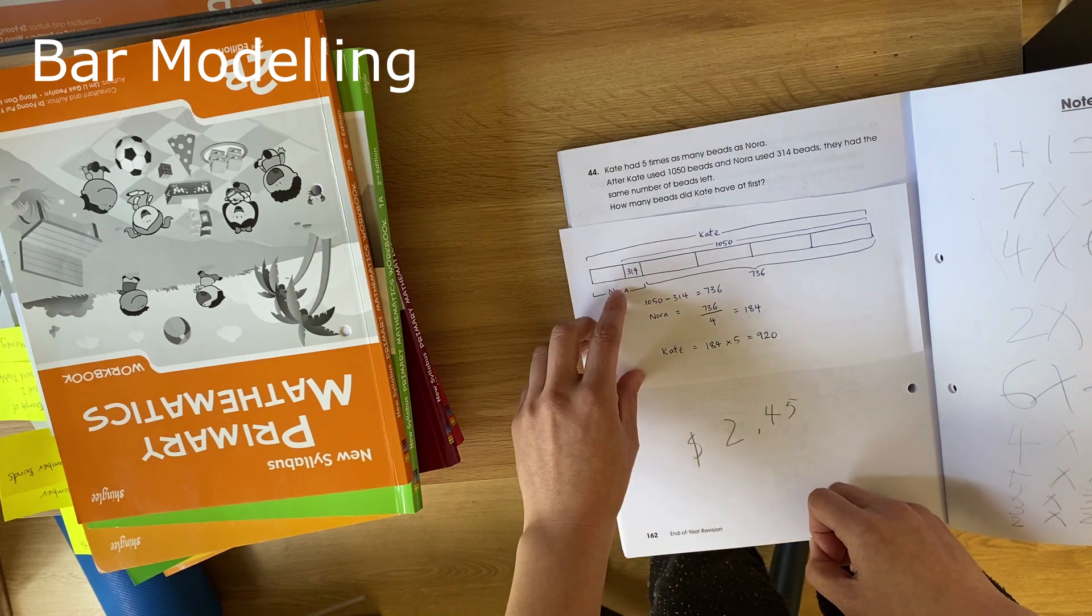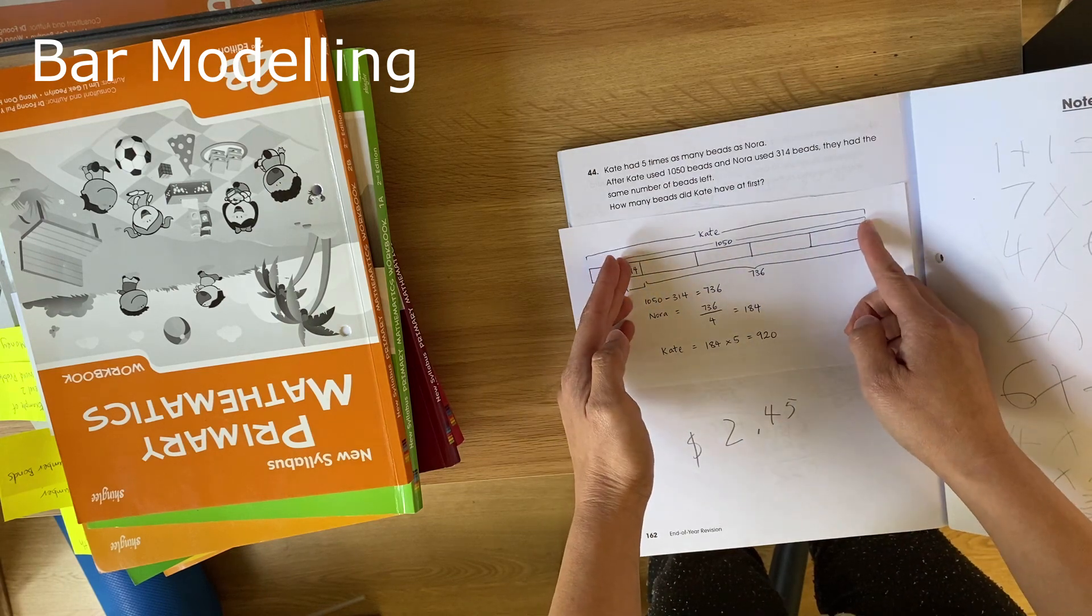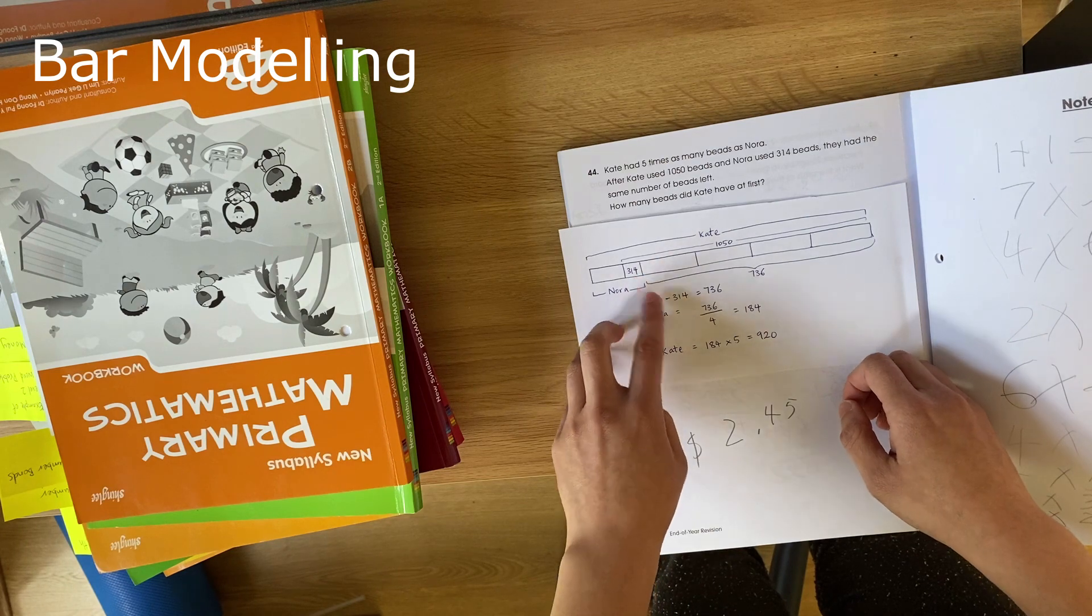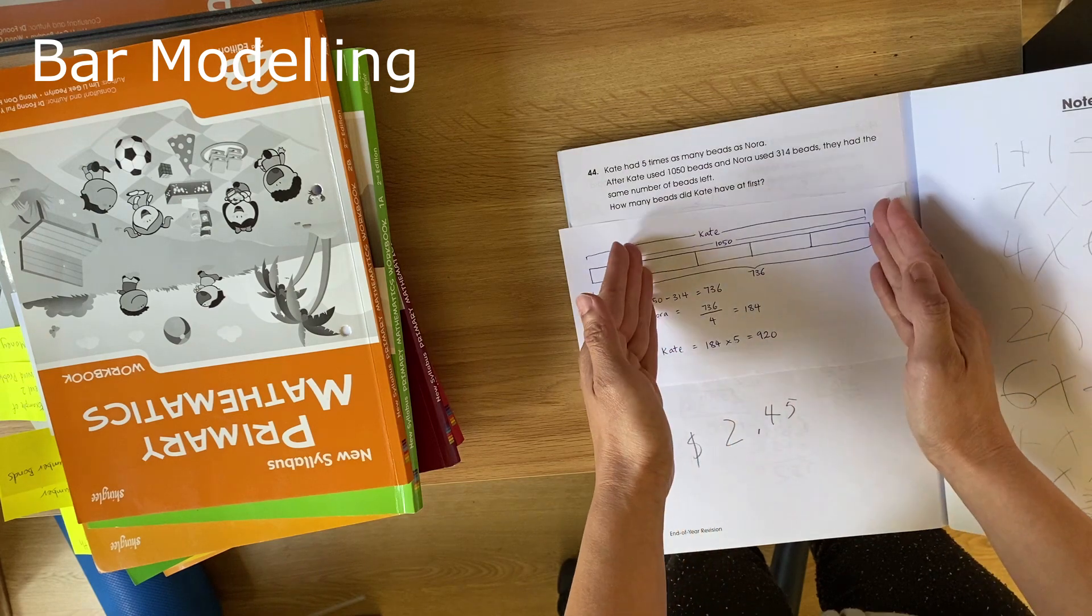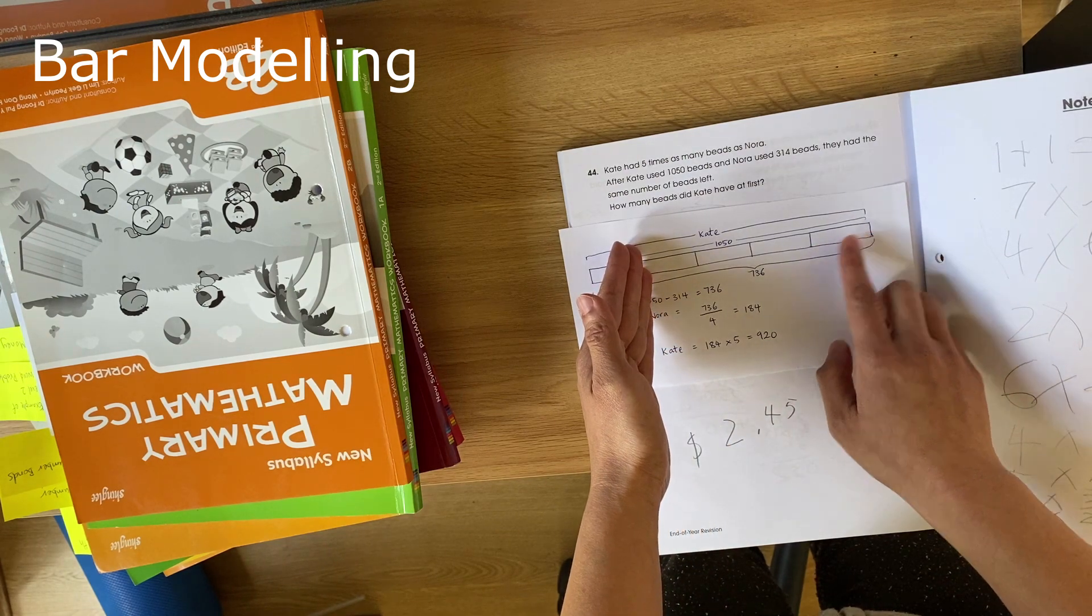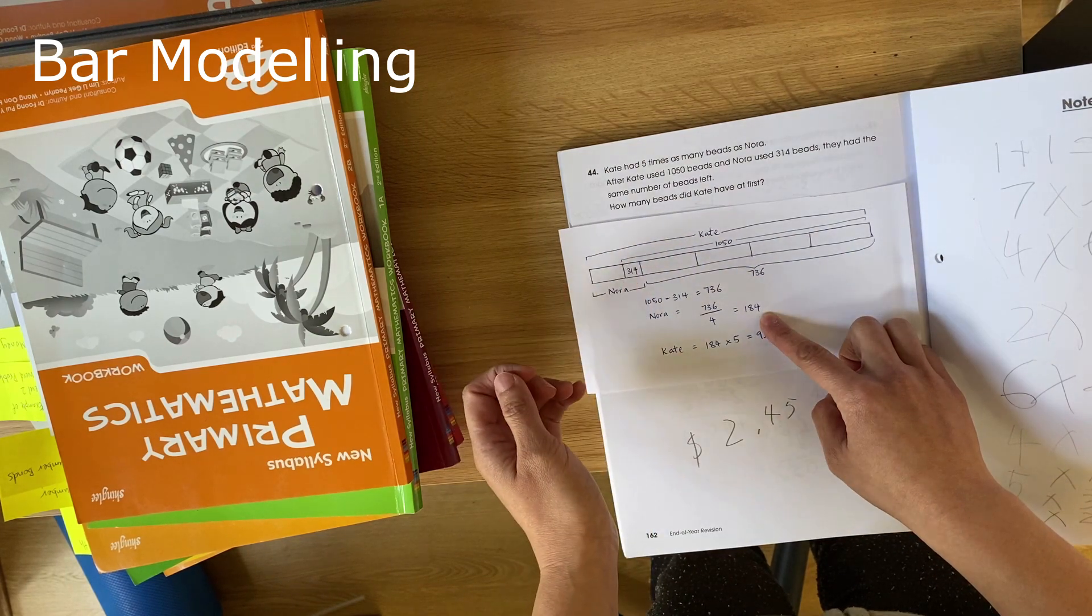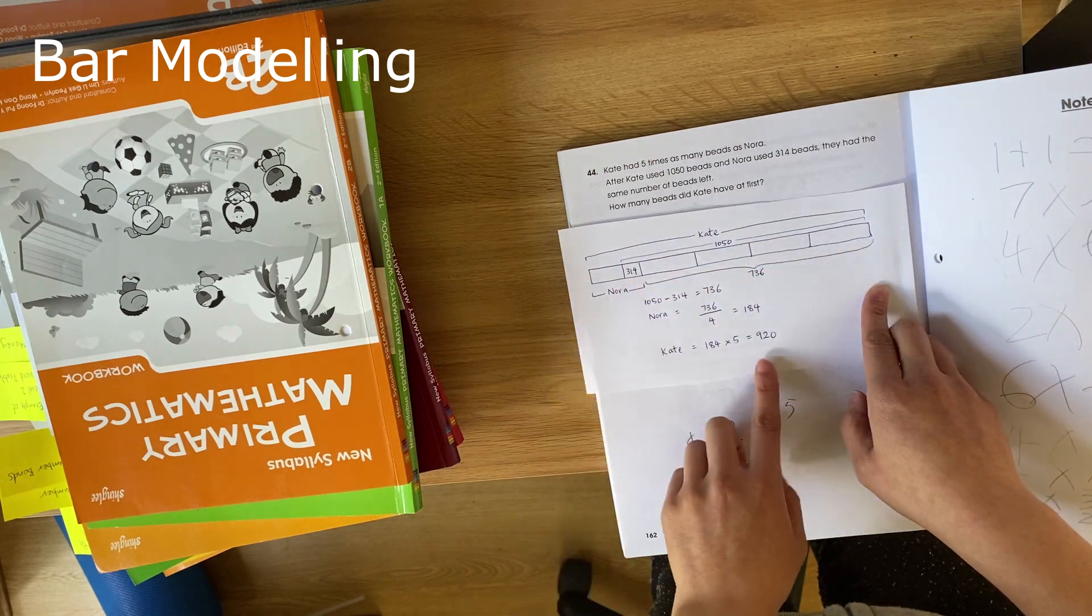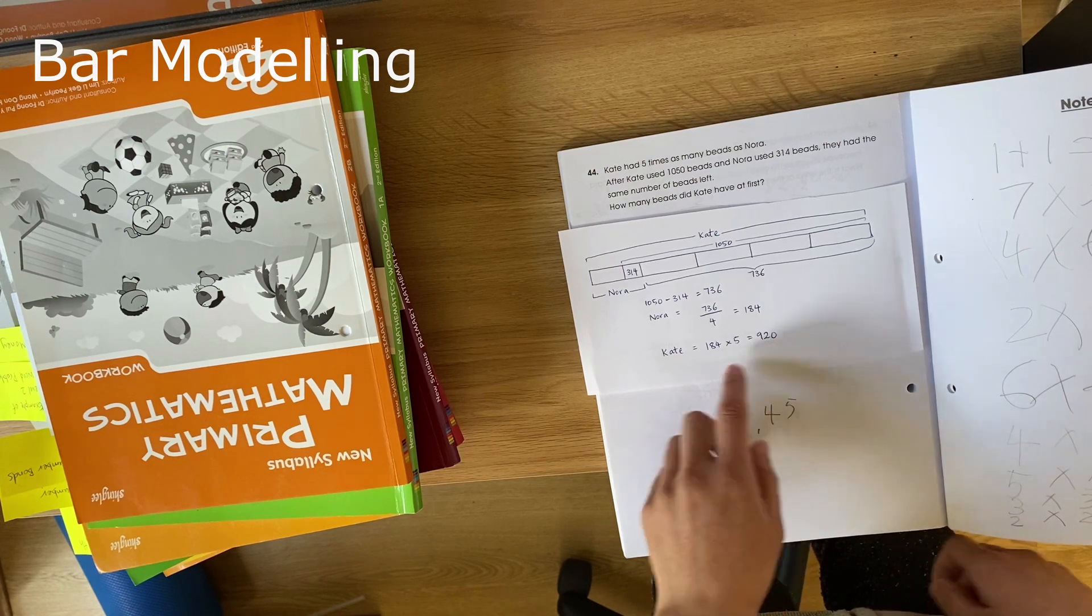How many beads did Kate have at first? With the information here, you can now work out what this section is. You know it's 1050 take away 314. So that's this section here and it gives you 736. So now that you've got this, you can work out what one section is by dividing it by four. That gives you 184. So that gives you how much Nora has. They want to know how much Kate has. So then you just multiply it by five to give you 920. And that's how you work out using a bar model.